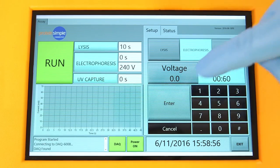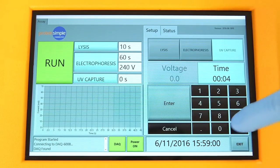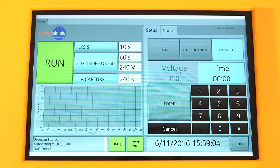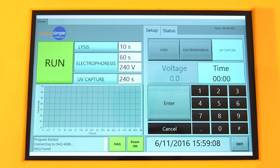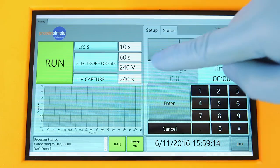When starting a new assay, we recommend a 10-second lysis time, a 60-second electrophoresis time, and a 4-minute UV capture time. The lysis and electrophoresis times can then be adjusted depending on your particular protein targets. The electrophoresis voltage should always be 240 volts.